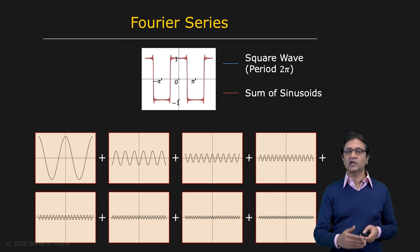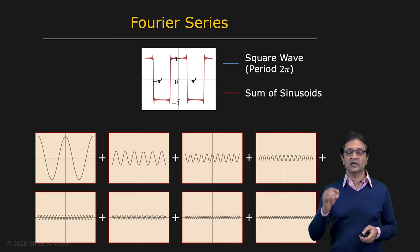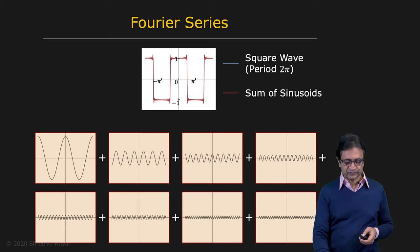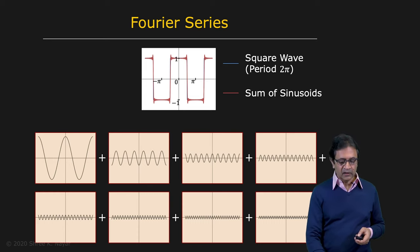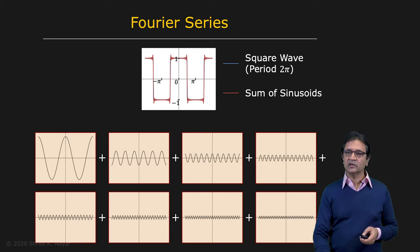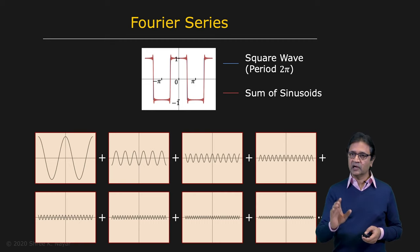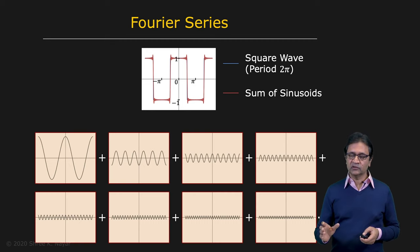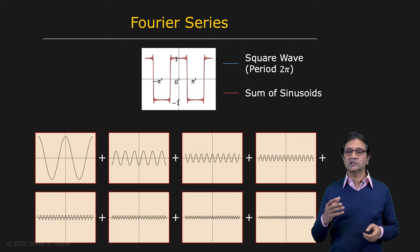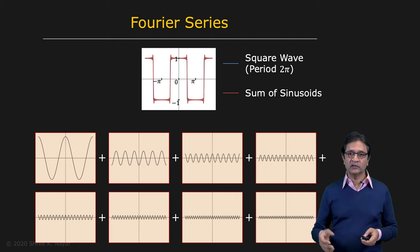In fact, if you could add an infinite number of these, you would get exactly the square wave. And once again, these are not arbitrary sinusoids — these are sinusoids that have been computed by the Fourier transform.